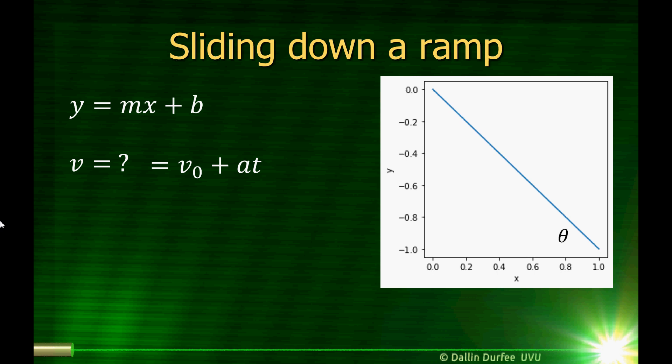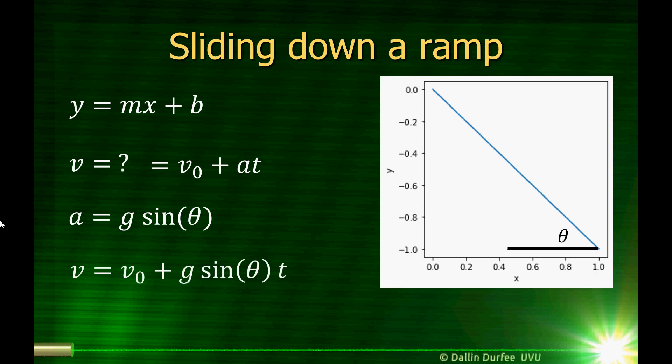But what is a? If I define the angle that the ramp makes relative to the horizontal to be theta, then the acceleration — as we found before when we were studying other topics — on a ramp, the acceleration along the surface of the ramp is just g, the acceleration due to gravity, times sine of theta. So now my velocity is just v-naught plus g sine of theta times t. If I just knew the time it takes to get to the bottom of the ramp, this will tell me what the velocity is at the bottom.